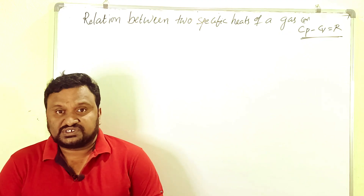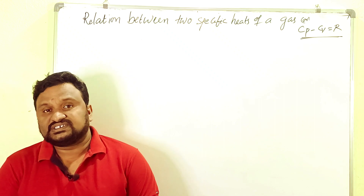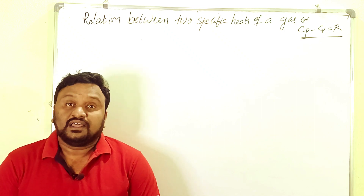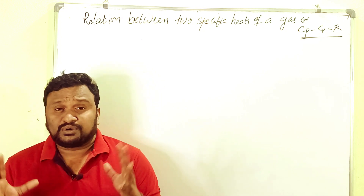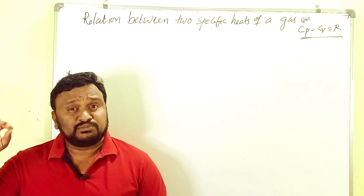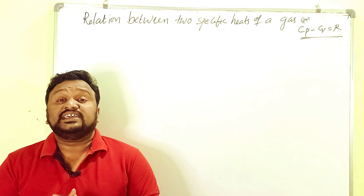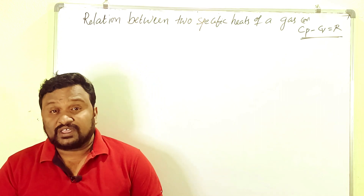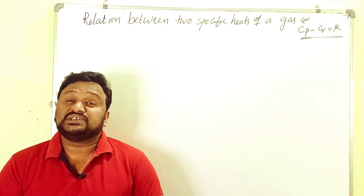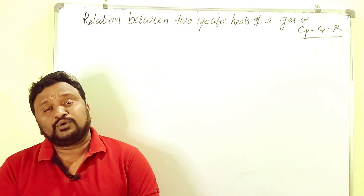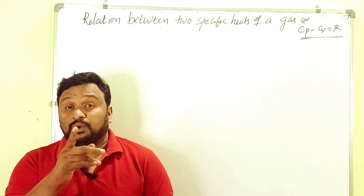Hi dear friends and viewers, welcome back to our channel Anunay Kumar Basics of Physics. This is the right place to learn physics. In this video we are going to discuss one of the most important topics in the chapter of thermodynamics — the relation between two specific heats of a gas, or the derivation of cp minus cv equals r. This is very important, so watch the video up to the last.